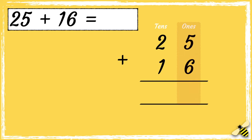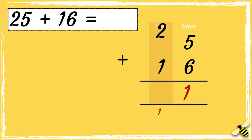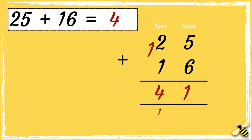So now our column addition is set up and we can add the digits in each column. Remember we start from the right hand side when we do column addition, so we'll start with the ones: 5 add 6 equals 11. We carry the 10 below in the tens column. Not forgetting about the 10 that we carried over: 2 add 1 add 1 equals 4. So we have 4 tens and 1 one, so the answer is 41.